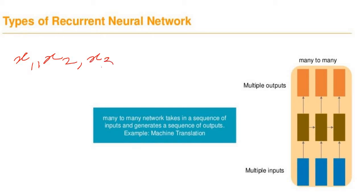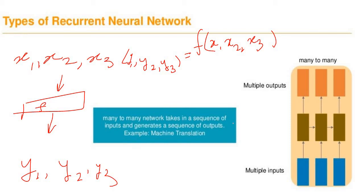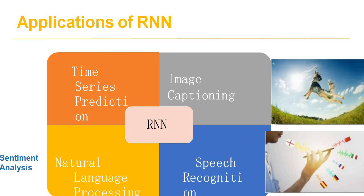Fourth, many-to-many: multiple inputs x1, x2, x3 are fed to the activation function and multiple outputs y1, y2, y3, yn are generated. Many-to-many networks take in a sequence of inputs and generate a sequence of outputs. The example is machine translation — translating speech or text from one language to another — where n number of sentences are given and we try to generate multiple outputs.